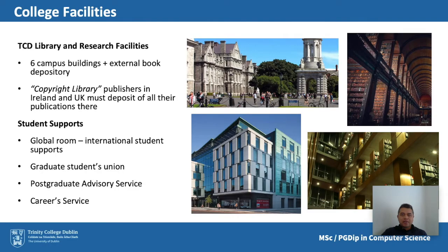In addition to school resources, there are extensive resources made available centrally by the university, including an extensive Trinity College Dublin Library with six on-campus buildings — accessible for books, electronic resources, and quiet study rooms. The Trinity College Library is a copyright library, meaning publishers in the UK and Ireland must deposit one copy of all publications there. Trinity, being over 400 years old — established in 1592 — has an interesting mix of historical traditions and modern state-of-the-art facilities.